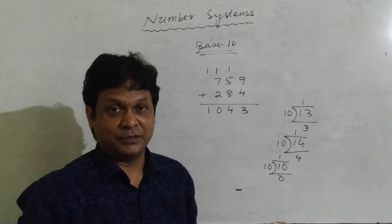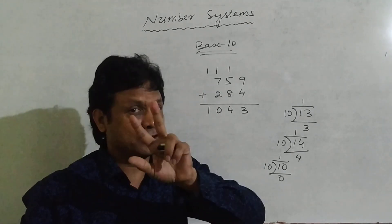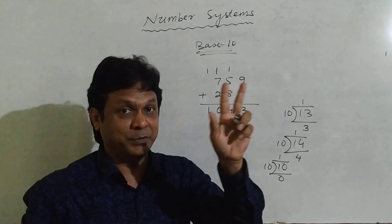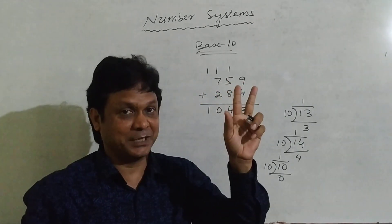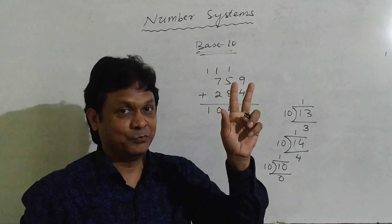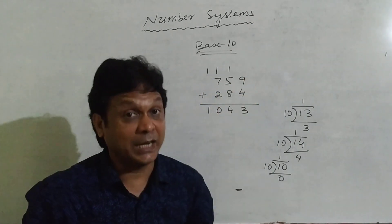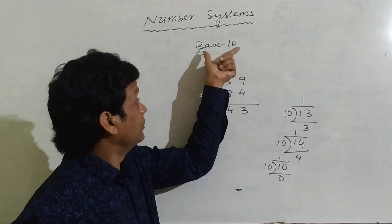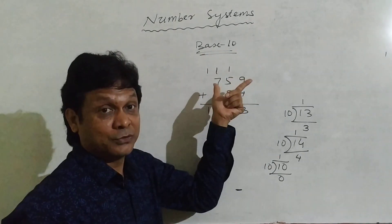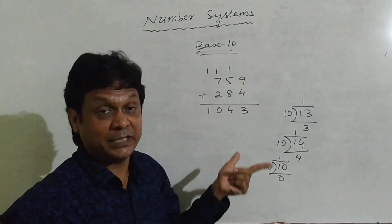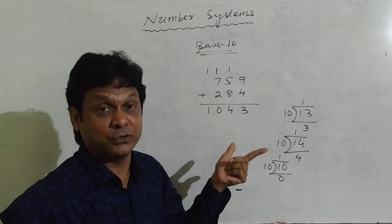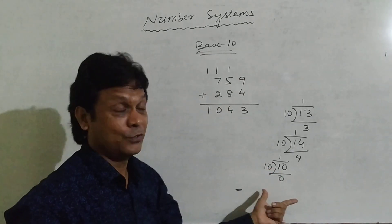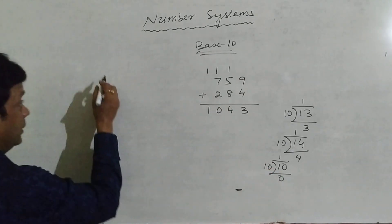Now come to the new discoveries. Base 3 is not there, base 4 is not there, base 5 is also not there in present systems — but you can add numbers whose base is 3, 4, or 5 by the same process.